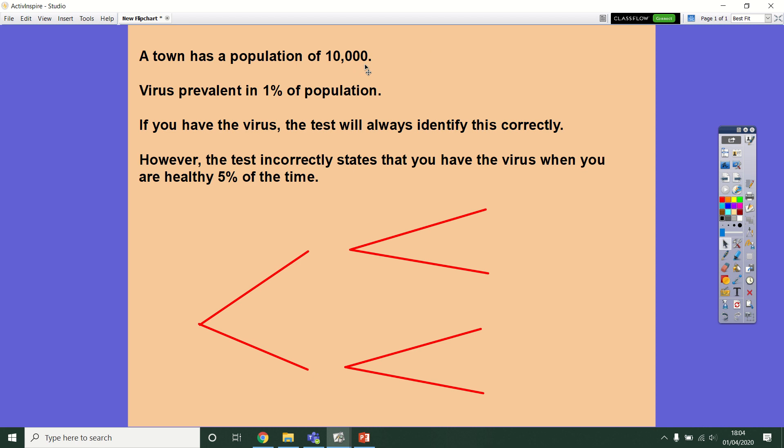And then following that, there's also some details about the test that you can do that determines if you've got the virus or not. So if you have the virus, if you are sick, then the test is guaranteed to identify this correctly. What that means is that there's no false negatives. So you're always told that you have it, you're never told that you don't have the virus if you actually do.